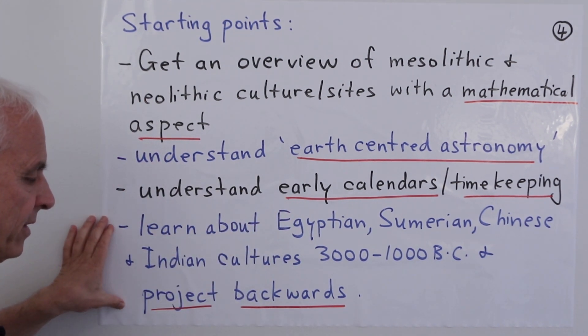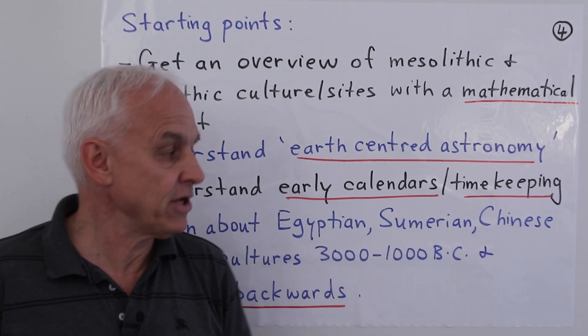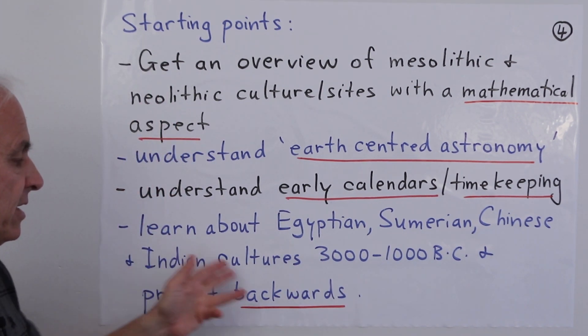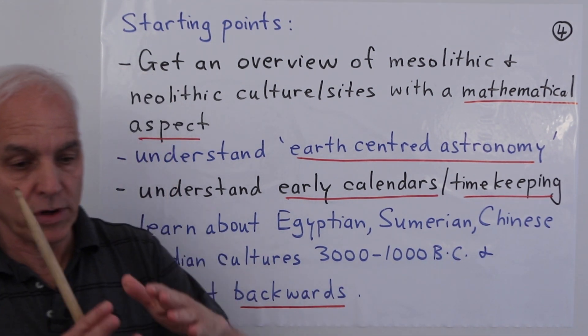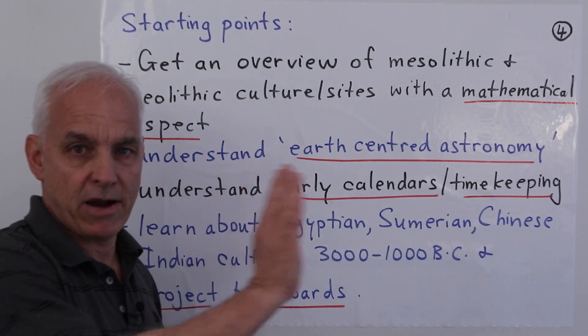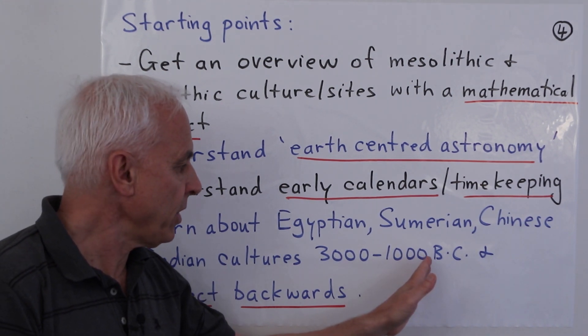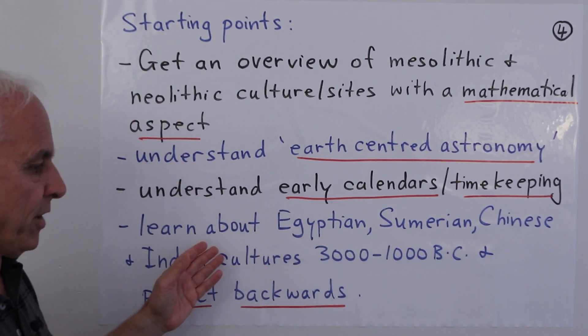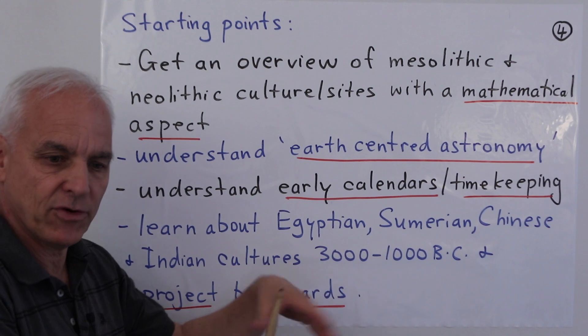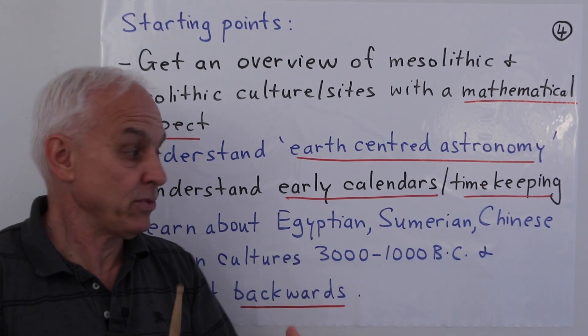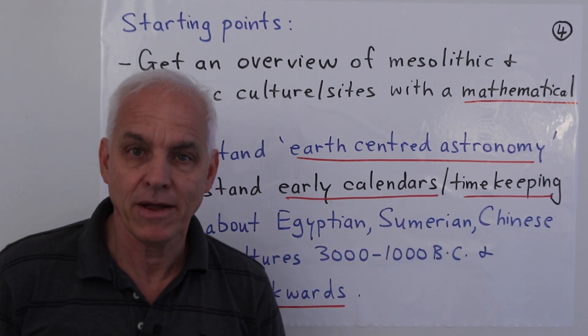Another place we can make progress is to go back to the ancient cultures that we do know quite a lot about - the Egyptian, Sumerian, Chinese, Indian cultures, roughly 3000 to 1000 BC - and look at what they were doing and project backwards. If we can see some development in these cultures, we can extrapolate backwards and ask what people might have been doing a few thousand years before that. I think that helps us. It positions us. It gives us some kind of anchor because we actually know quite a lot about these civilizations. So I think we need to look at them with some care.